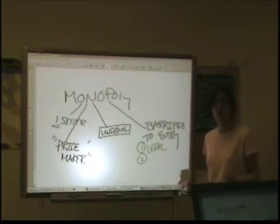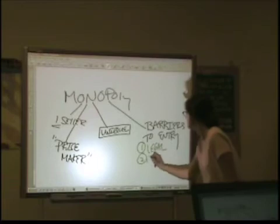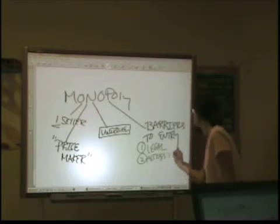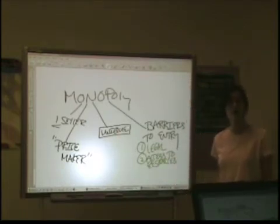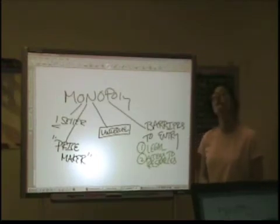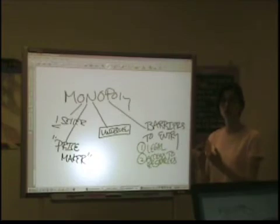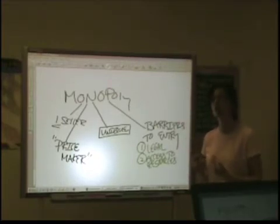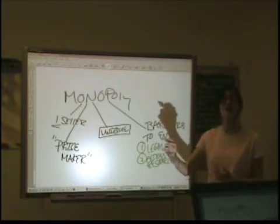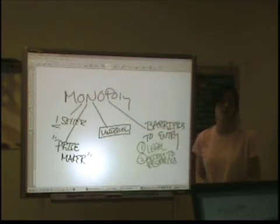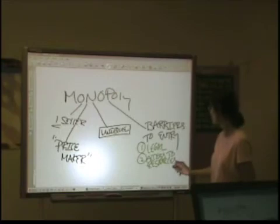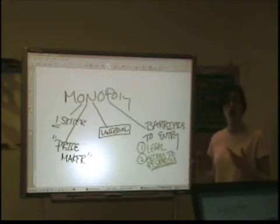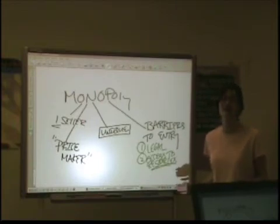Another issue you might have is access to resources. If we're talking about a resource that is very rare, and we're dealing with a monopolist that has a strong degree of vertical integration — meaning they control a lot of their resource suppliers and probably some of their distributors — and if they own all of the suppliers for a particular resource, nobody else is cutting in on that action. That's enough to keep other firms out of the market.